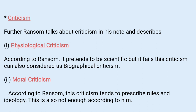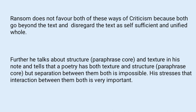In his note, Ransom further tells about two types of criticism: psychological and moral. Psychological criticism tends to be scientific, goes outside the text, and therefore fails — because it starts using the biography of writers. Moral criticism tends to prescribe rules and ideologies, but applying rules and ideologies also takes us beyond the text, since we need to borrow them from our ancestors. Therefore, according to Ransom, both these criticisms go beyond the text and are not sufficient.